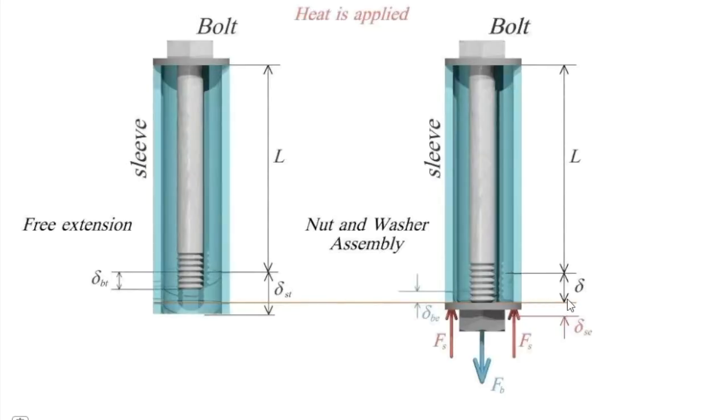First of all, where would be that equilibrium deformation? It has to be between these two values, right? Between delta bt and delta st. But sometimes, if you want to quickly find the answer in the multiple choice, we can determine delta bt and delta st. The answer that is between these two values is the only possible option, right?